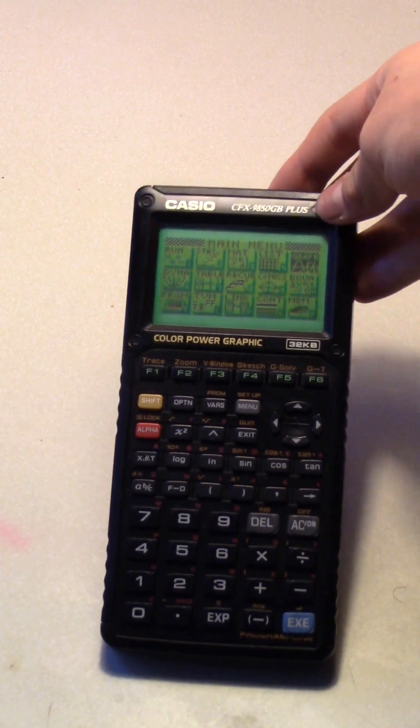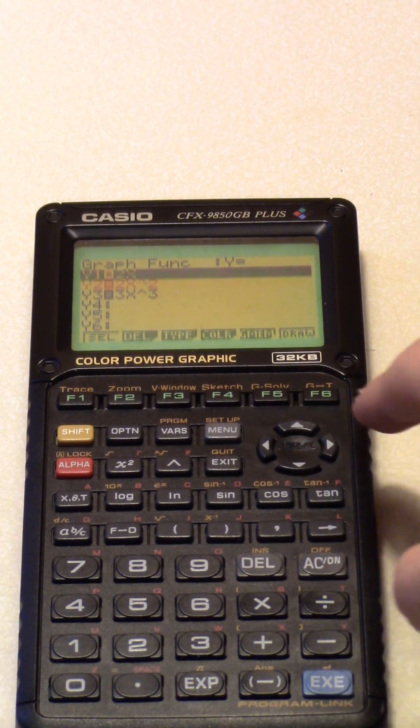In fact, this was Casio's first calculator to feature a color screen. Granted, this was only in three colors: blue, orange, and green.